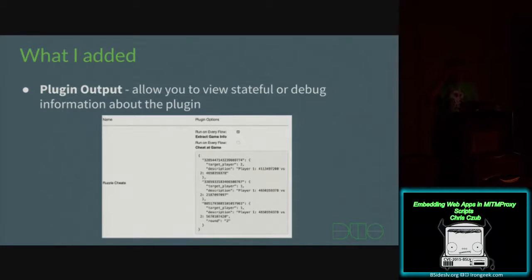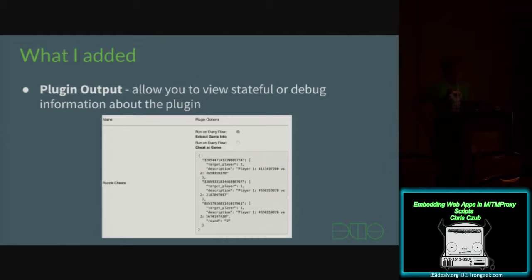I added plug-in output, which is static text that your script can print to the plug-in options page to display debug or stateful information about what the plug-in's doing. For example, right here this is for my Ruzzle cheat plug-in, showing the games it's detected that are in progress and a little bit of information about them.